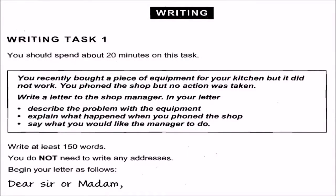We are now on the writing section of Test B of the IELTS 8 student book. The first task is: you recently bought a piece of equipment for your kitchen but it did not work. You phoned the shop but no action was taken. Write a letter to the shop manager. In your letter, describe the problem with the equipment and explain what happened when you phoned the shop, and say what you would like the manager to do.